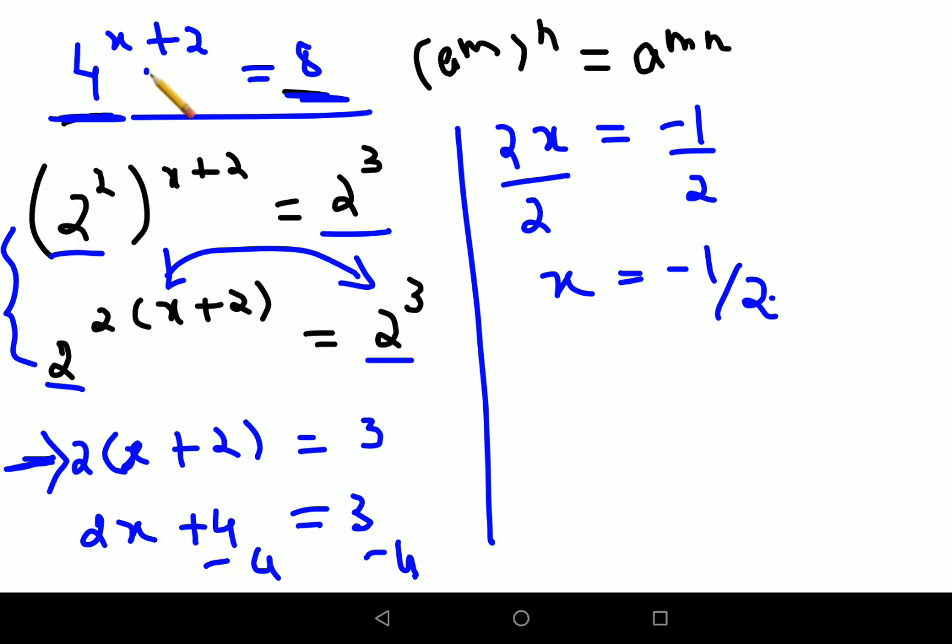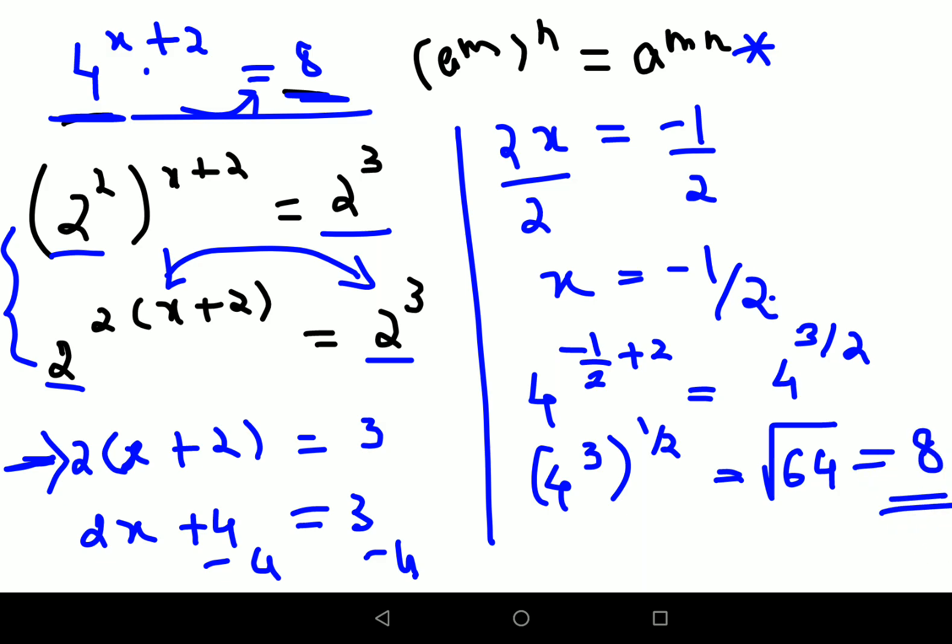Now let's try and put this value over here and find if we are getting the value as 8. So we have 4 raised to minus 1 by 2 plus 2, so this comes out to be 4 raised to 3 upon 2. This can be written as 4 raised to 3 the whole raised to 1 by 2. So this comes out to be 4 raised to 3 is 64 and 1 by 2 is nothing but root. Root of 64 is 8. So I hope you understood how to solve these kind of sums when you have something in the similar base.